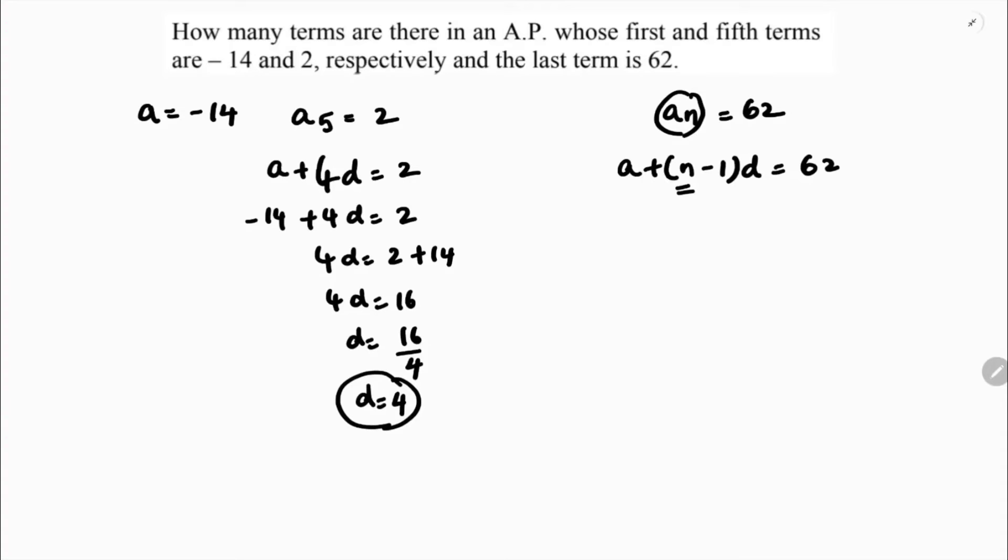If we substitute A and D, we will get the value of N. A is minus 14 plus N minus 1 into D is 4 equals 62. So 4N minus 14 minus 4 is minus 18 is 62.